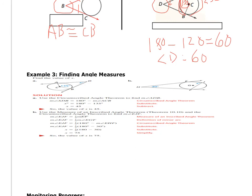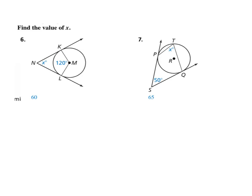We're on the last page. For problem six, the angle is formed by two tangent lines — it's a circumscribed angle. They give us the central angle, and using the circumscribed angle theorem, we take 180 minus the central angle, which equals 60. So the circumscribed angle equals 60 degrees.